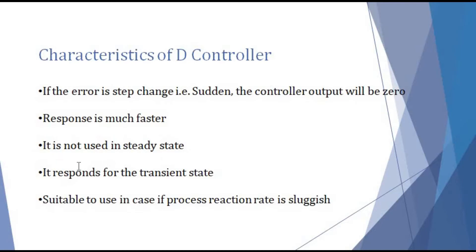The D-controller is not used in steady state, but it responds for the transient state. D-controller is suitable to use when the process reaction rate is sluggish. If the process reaction rate is very slow, then we need to improve the speed of response, and in that case we will use a D-controller.